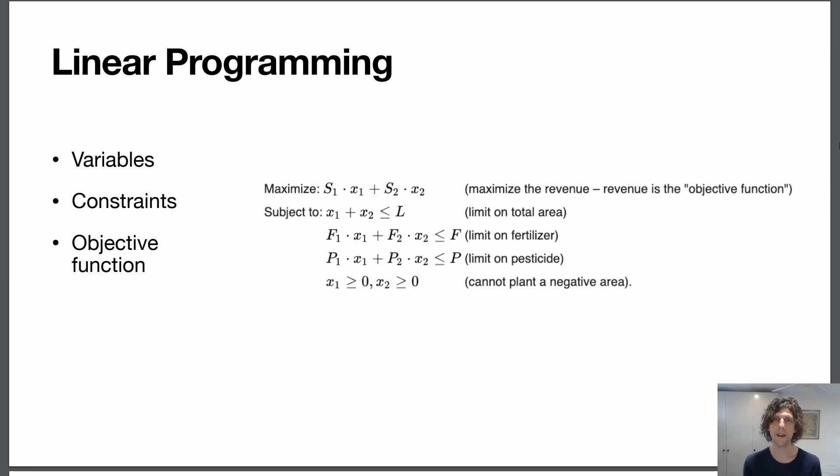So one constraint is you've got a total amount of land area, so x1 plus x2 the total area needs to be less than some limit. The different crops require different amounts of fertilizer but you've only got a total amount of fertilizer.